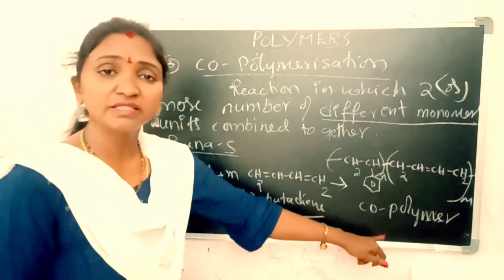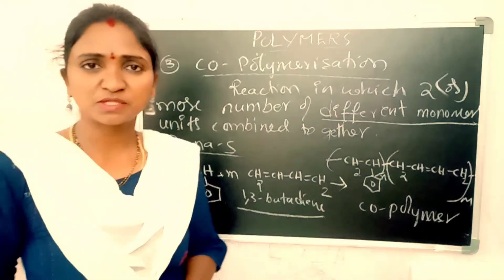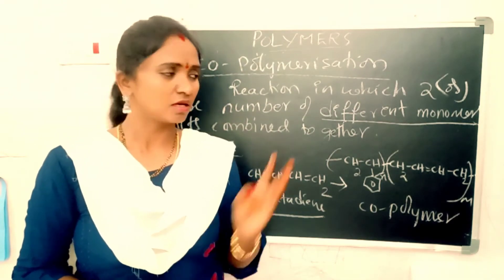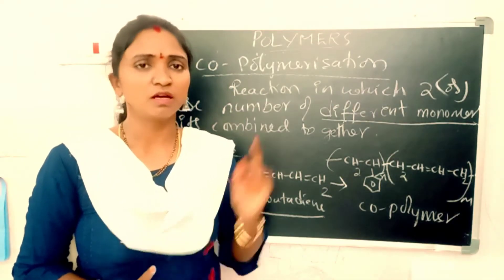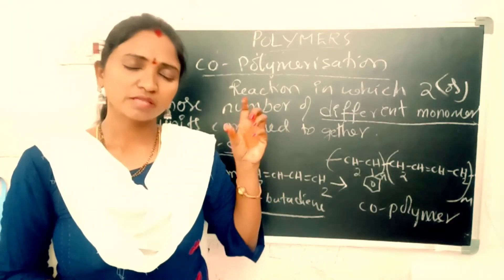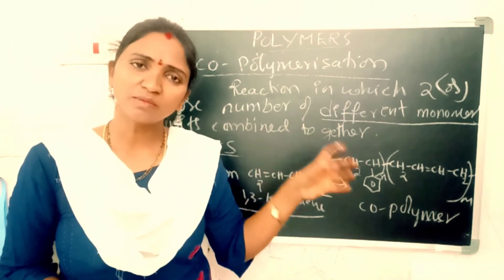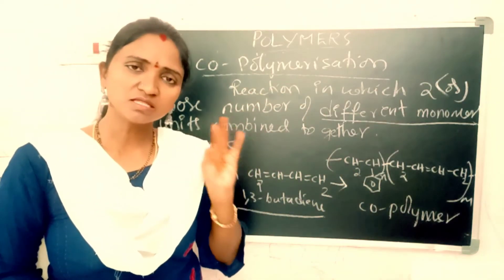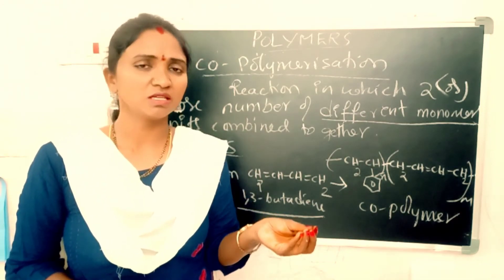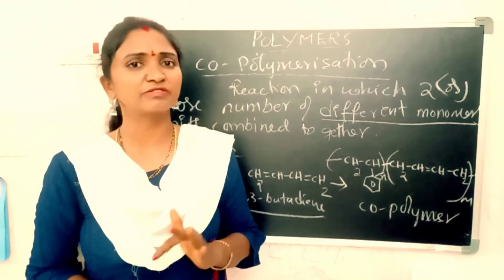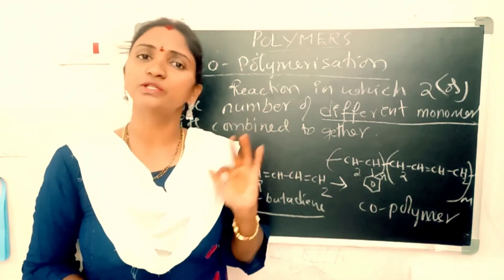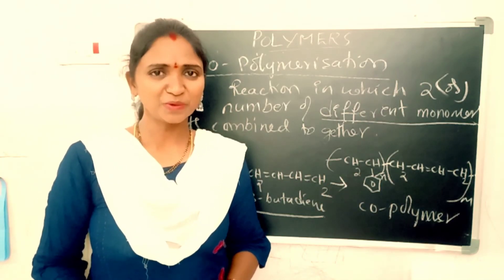So this is about the types of polymerization. There are three types: addition polymerization — where a polymer is obtained from monomers without forming any side product; condensation polymerization — where a polymer is obtained along with forming some side product; and copolymerization — which involves a combination of two or more different monomer units to give a copolymer. I hope you understand. Thank you.